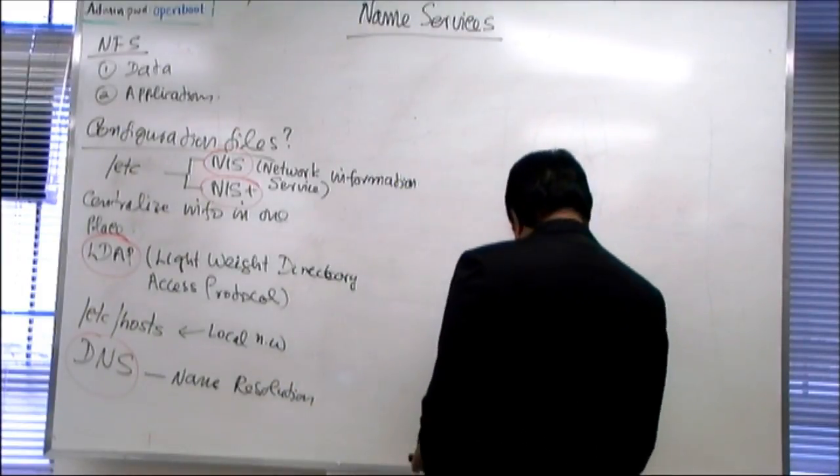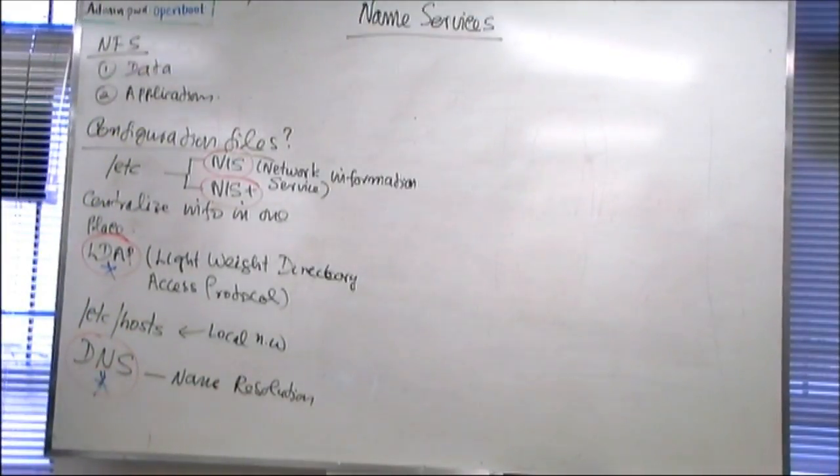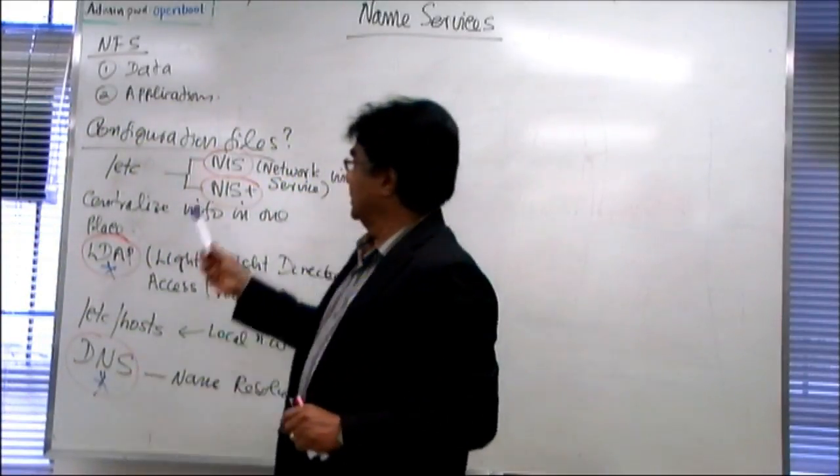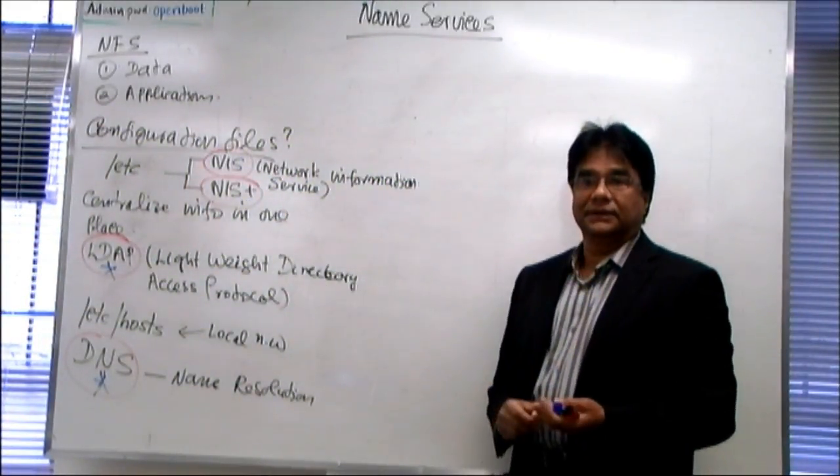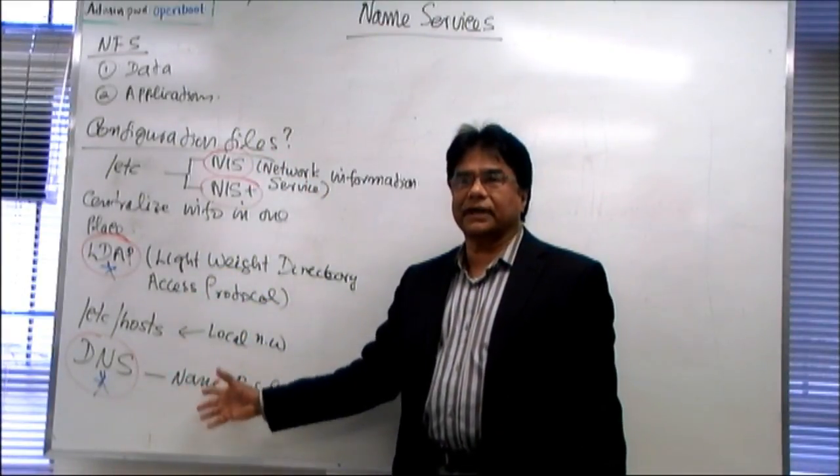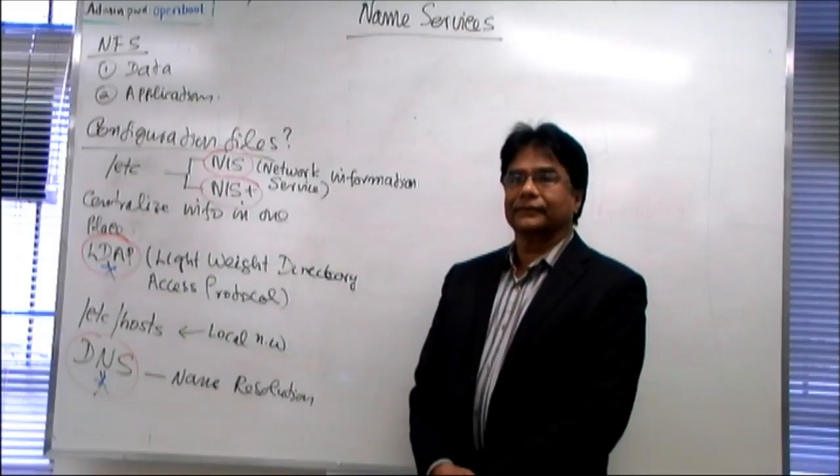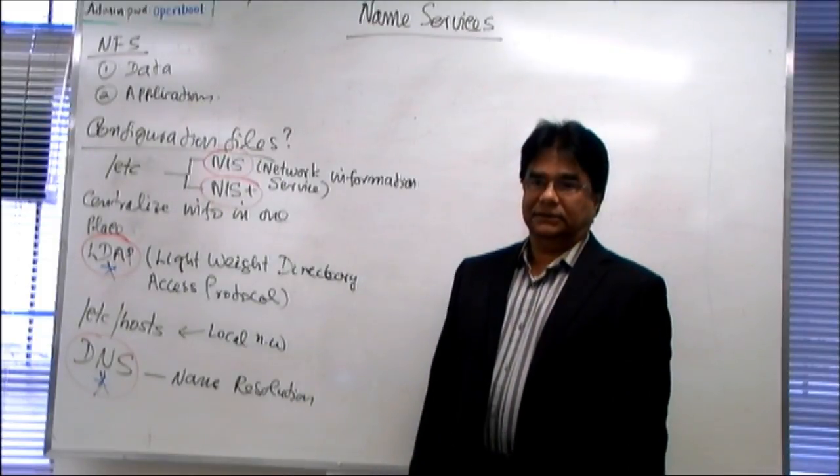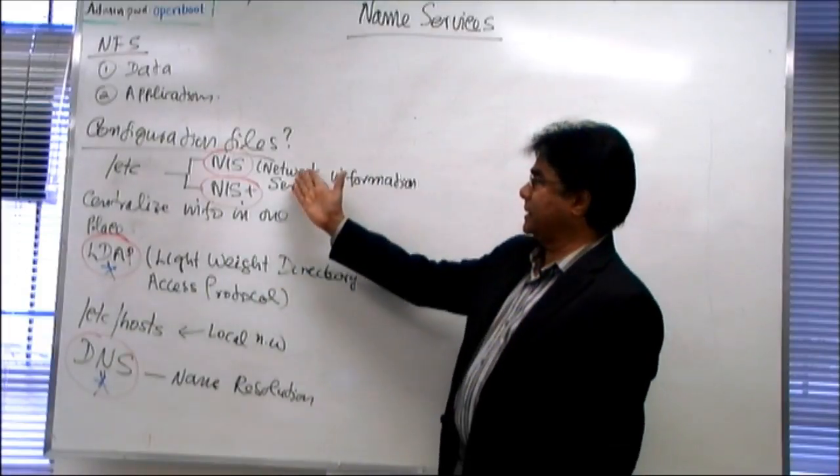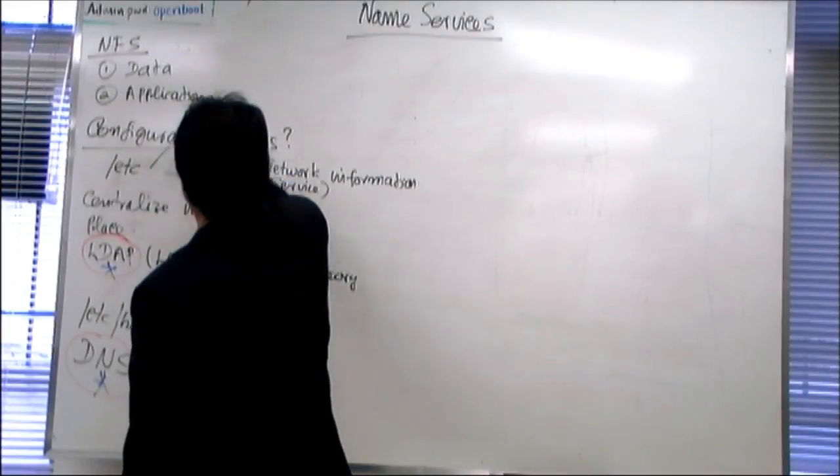But out of these, all these three, only these two, only LDAP and DNS goes to the internet. That is internet compatible. We can get information from the internet only using these two. But this is local. This is also local. What is the beauty of NIS and NIS Plus compared to DNS? What is the advantage of these two compared to DNS? It has more information. Yeah, I can centralize all the information. Not only ETC host. What are the information I can centralize here? In ETC, in NIS. What are the information? What are the files under the ETC?